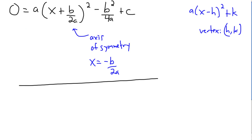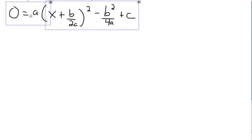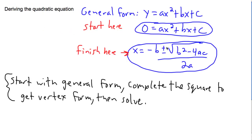We can go further. We've essentially derived the axis of symmetry, but now let's keep working to reach the quadratic formula. I want to rearrange this to look like x equals minus b plus or minus the square root of b squared minus 4ac, all over 2a.